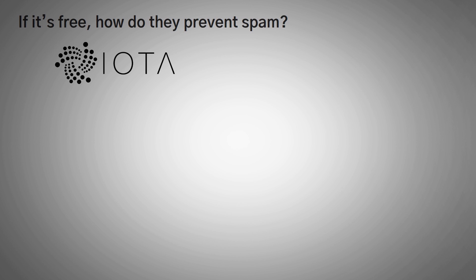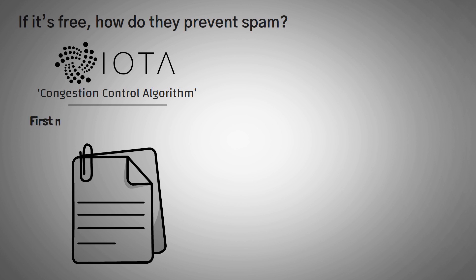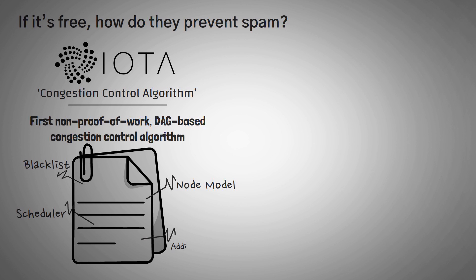Right now, IOTA uses a congestion control algorithm that's pretty technical. On their blog post about it, they claim that it is the first non-proof-of-work DAG-based congestion control algorithm ever. It is very complicated and uses words like blacklist, node model, scheduler, and additive increase multiplicative decrease algorithm. I may take the time to explain it fully in another video, but it's very niche, and I'm not sure if everyone wants to understand it.